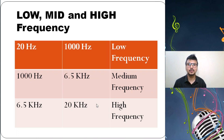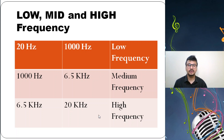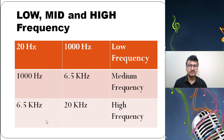There are three frequency concepts: low frequency ranges from 20 hertz to 1,000 hertz; medium frequency ranges from 1,000 hertz to 6.5 kilohertz (one kilohertz equals 1,000 hertz); and high frequency ranges from 6.5 kilohertz to 20 kilohertz.